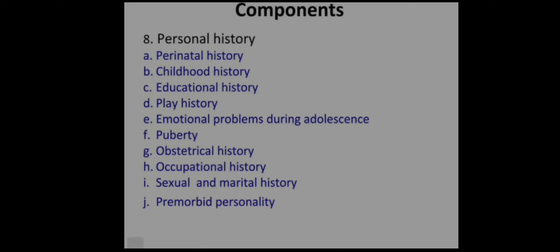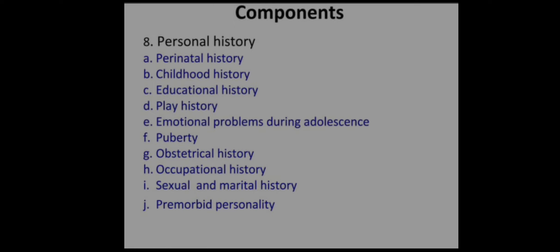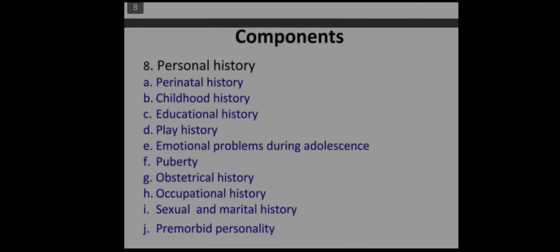The eighth component is personal history, which is divided into further points: perinatal history, childhood history, educational history, play history, emotional problems during adolescence, puberty, obstetrical history, occupational history, sexual and marital history, and pre-morbid personality. These are the main components of any psychiatric history.